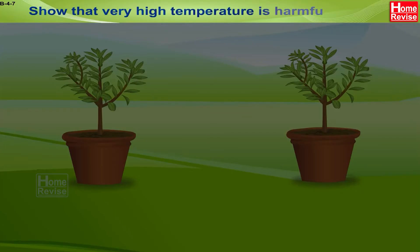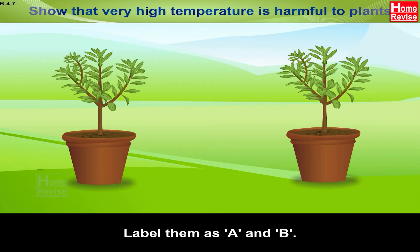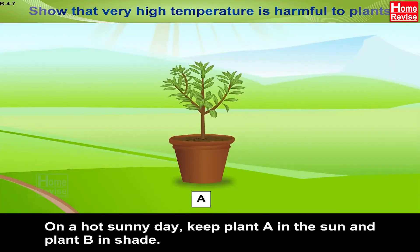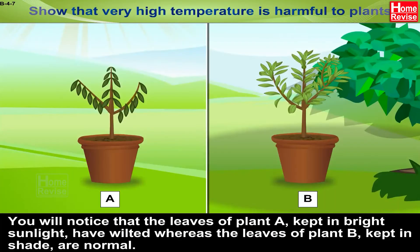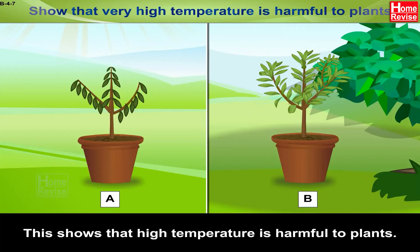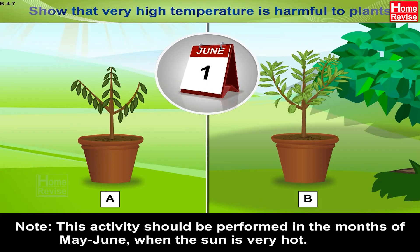Activity to show that very high temperature is harmful to plants: Take two healthy potted plants such as balsam and label them A and B. On a hot sunny day, keep plant A in the sun and plant B in the shade. You will notice that the leaves of plant A have wilted, whereas the leaves of plant B are normal. This shows that high temperature is harmful to plants. Note: This activity should be performed in May or June when the sun is very hot.